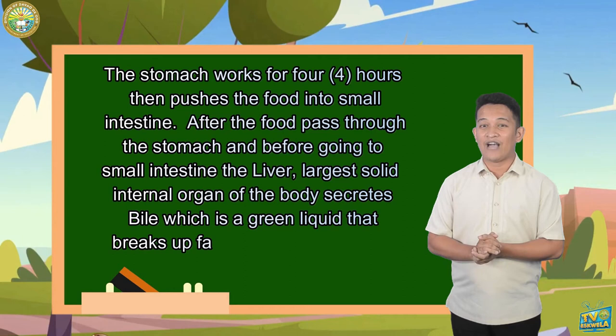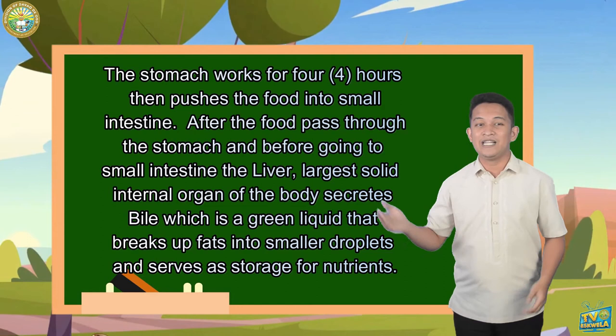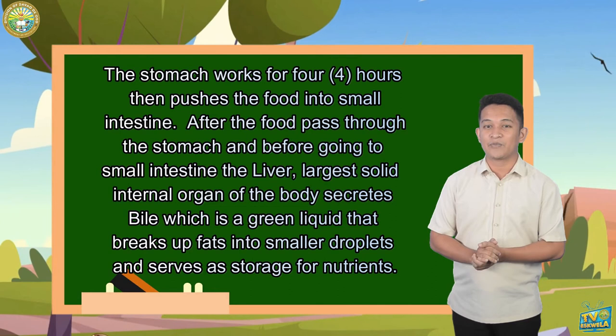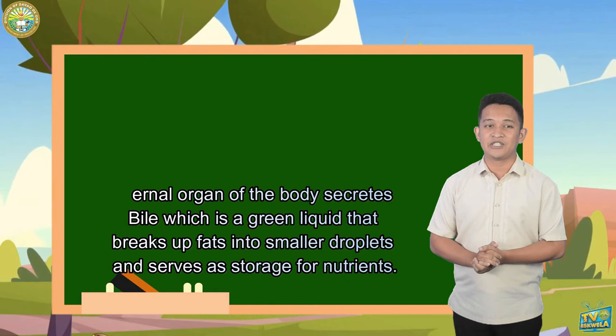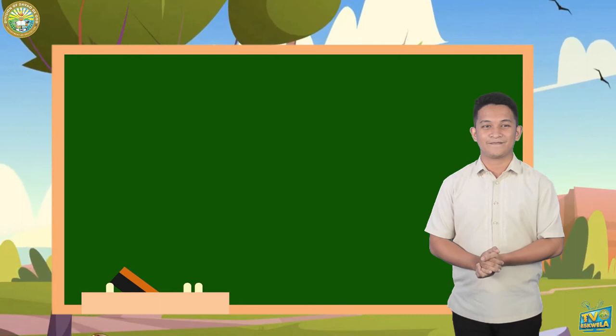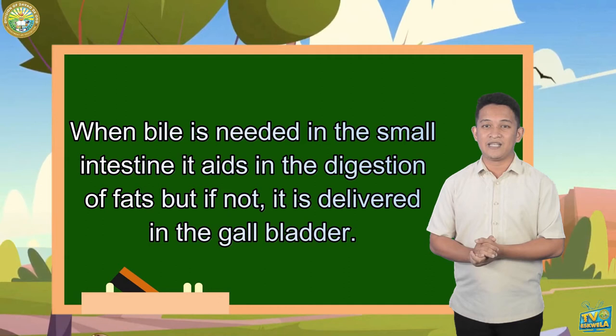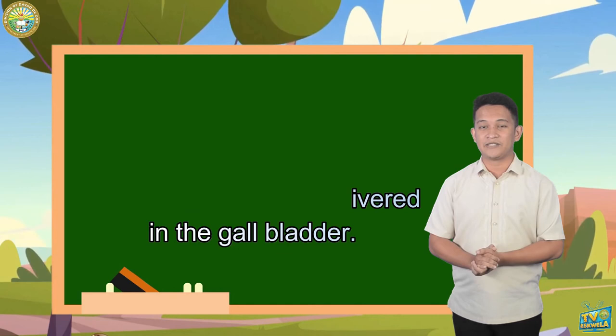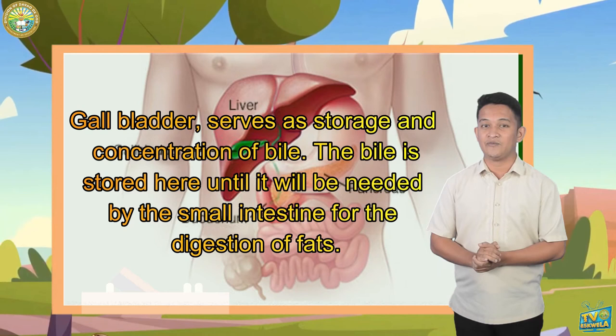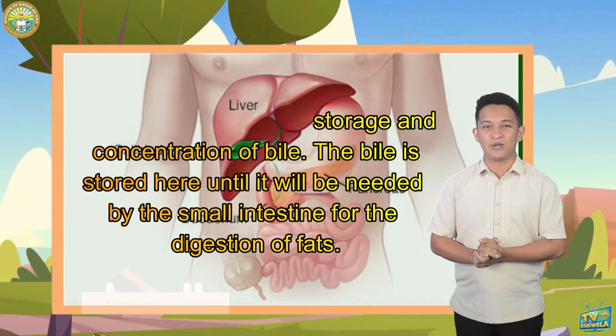After the food passes through the stomach and before going to the small intestine, the liver — the largest solid internal organ of the body — secretes bile, a green liquid that breaks up fat into smaller droplets and serves as storage of nutrients. When bile is needed in the small intestine, it aids in the digestion of fats; if not, it is delivered to the gallbladder. The gallbladder serves as a storage and concentration site for bile until it is needed by the small intestine for digestion of fats.